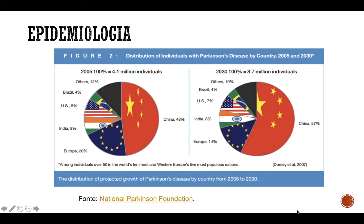Para começar, utilizaremos dois gráficos mostrando a prevalência da doença de Parkinson em 2005, e uma simulação mostrando, de acordo com modelos matemáticos, qual será a prevalência em 2030. Já podemos observar que nesses 25 anos irá dobrar o número de pessoas diagnosticadas com a doença de Parkinson, passando de 4,1 milhões em 2005